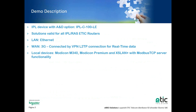The local devices we have at the station are a Modicon M340, Modicon Premium, and XLAN Plus devices. There is a nice feature developed by ETIC Telecom: the Modbus TCP server functionality. This way the XHDCL devices of ETIC Telecom will give us data on the status of the communication — not using SNMP but using the Modbus TCP server. This is a very interesting functionality we are using right now with different customers.